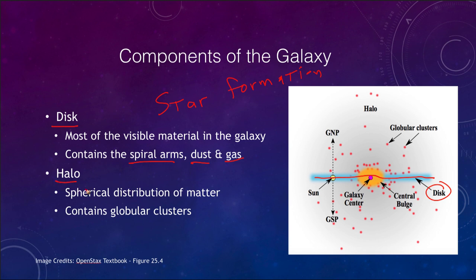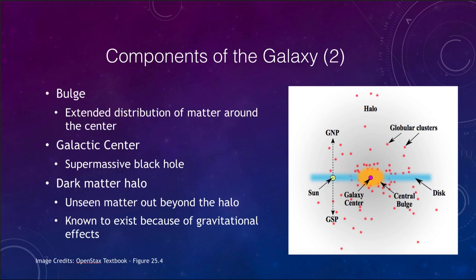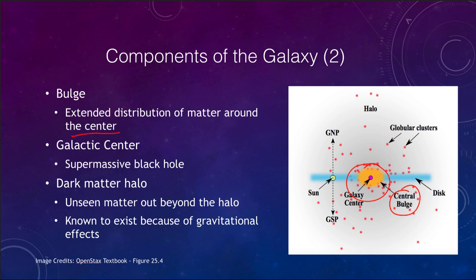There is also the halo, which is a spherical distribution — that's where those globular clusters that Harlow Shapley saw were. Those globular clusters are centered on the Milky Way, and we happen to be located towards the outskirts of the galaxy. The halo has a lot less material; it has the globular clusters but certainly no gas and dust that would be forming new stars. There is also the bulge of the galaxy — the central bulge is an area in between the disk and the halo. The disk is very flattened, the bulge is extended a little bit, and the halo is a big spherical area around it.